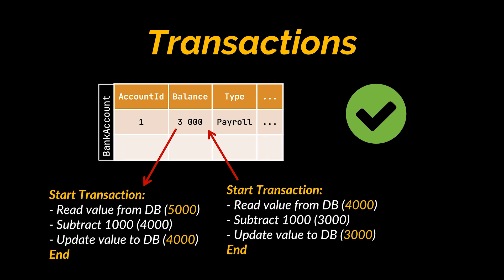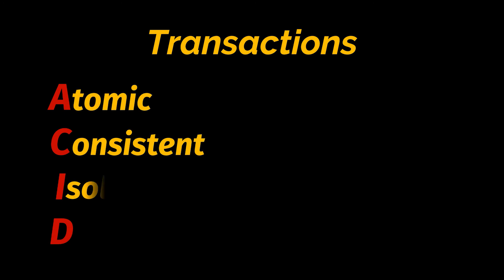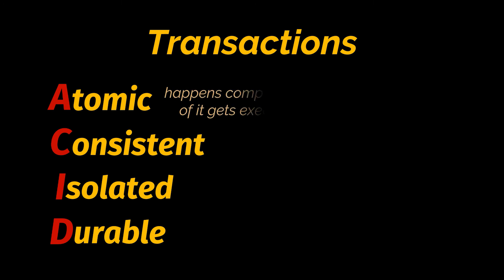And that is exactly what transactions allow us to do. Everything they provide falls under the acronym ACID: Atomic, Consistent, Isolated, and Durable. Atomic means the steps inside the transaction — whether four or thirty — happen completely, or none of them get executed at all.